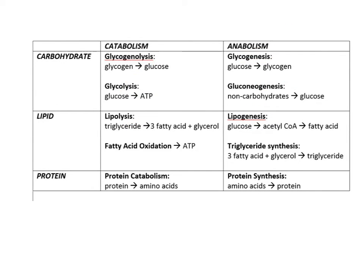Looking at carbohydrate metabolism, the catabolism aspect involves glycogenolysis — breaking down glycogen to form glucose. Glycogen is the polymer and storage form of glucose, so glycogenolysis increases blood glucose. The opposing anabolic reaction is glycogenesis, where glucose is stored as glycogen, which decreases blood glucose.